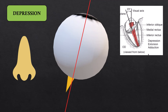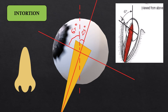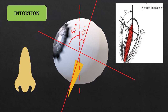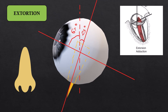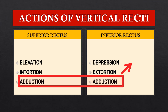The inferior rectus causes extorsion in the adducted gaze. It should now be clear that superior rectus causes elevation, inferior rectus causes depression, and in rotational movement they cause intorsion and extorsion respectively. There is also a tertiary action called adduction — both the superior rectus and inferior rectus cause adduction as their tertiary action. However, they are tested for elevation and depression in abduction, which is their optimal gaze position.